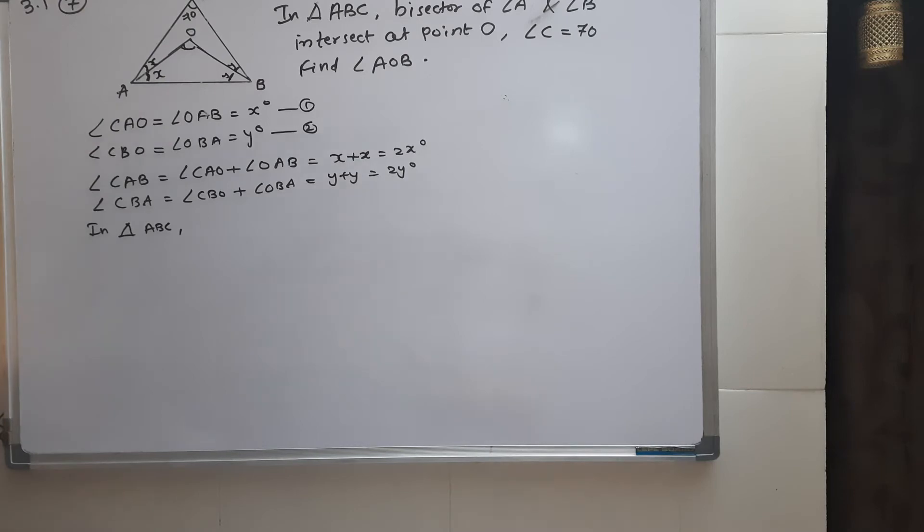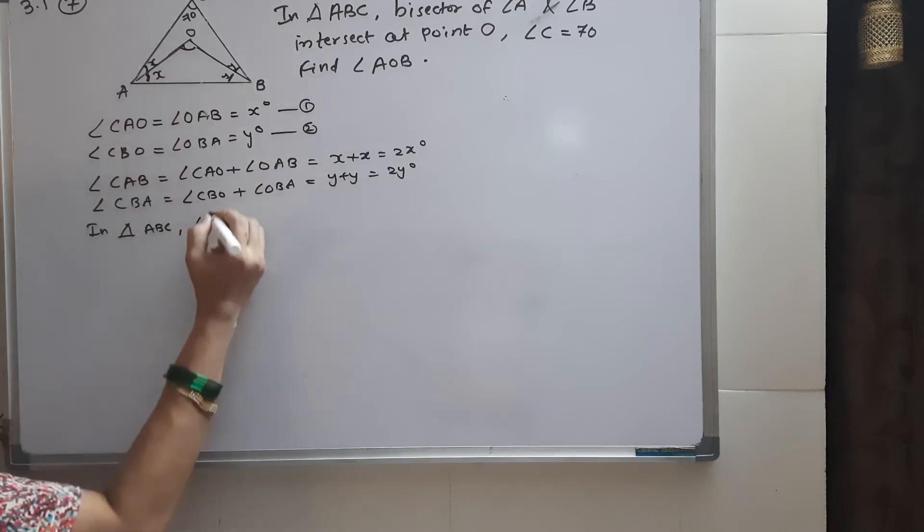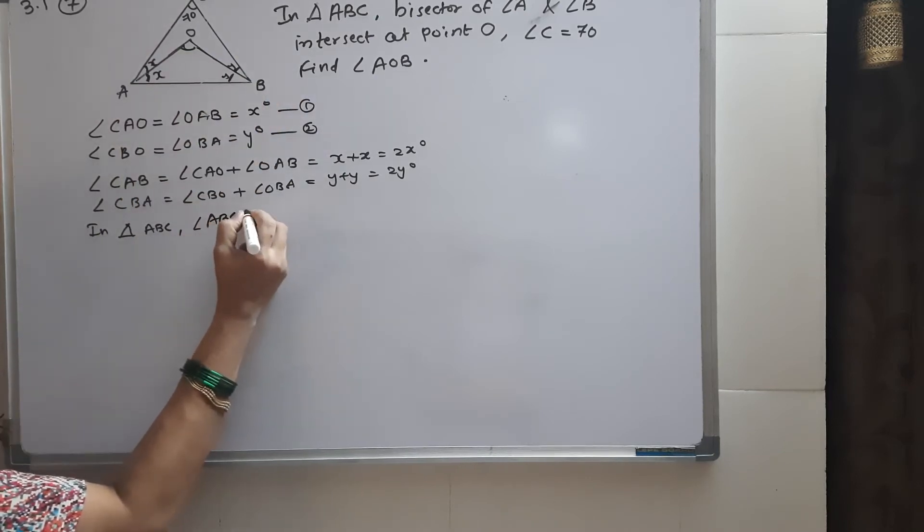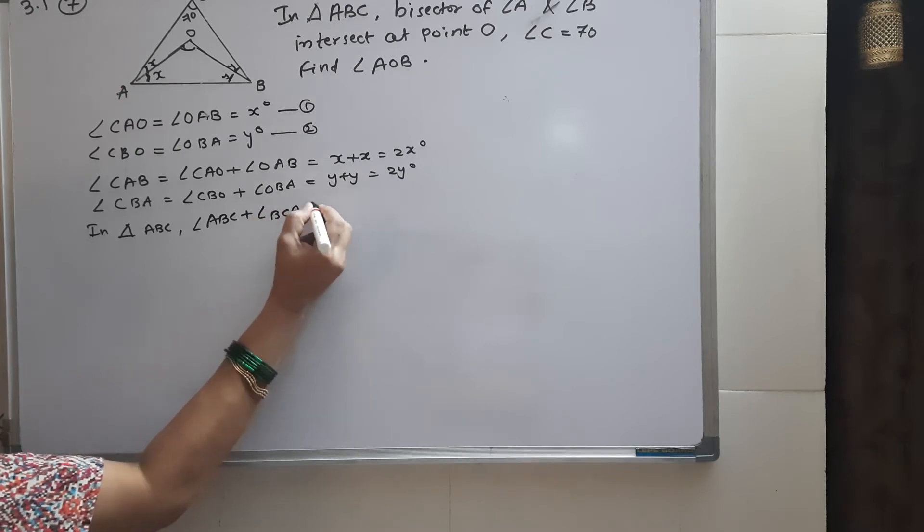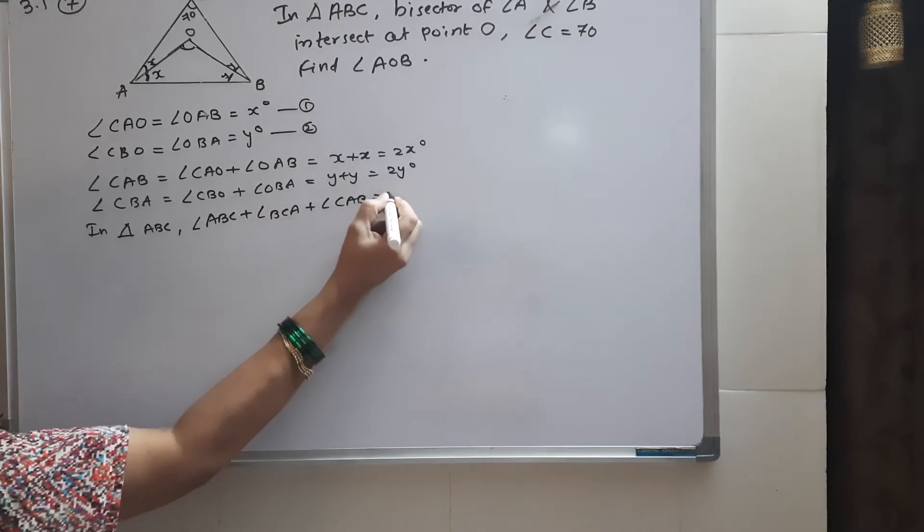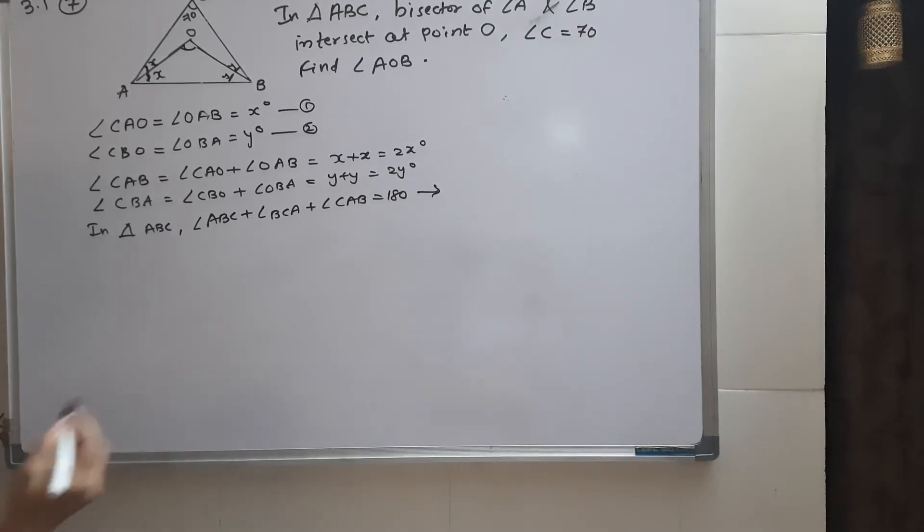In triangle ABC, we use the theorem that the sum of all angles is 180 degrees. So angle ABC plus angle BCA plus angle CAB equals 180.